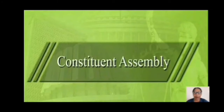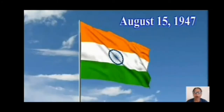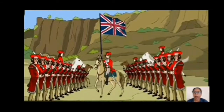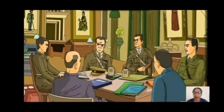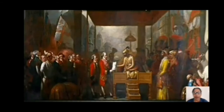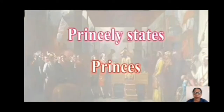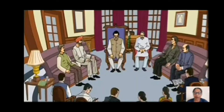Constituent Assembly. India became independent on August 15, 1947. Before that, the British ruled over India. They had divided India into provinces like Bombay, Bengal and Madras for the convenience of administration. The administration in these provinces was carried out by people's representatives. Similarly, the local princes were carrying out the administration in some areas. Such areas were known as princely states and their chiefs were known as princes. The representatives of the provinces and the princely states were included in the Constituent Assembly.